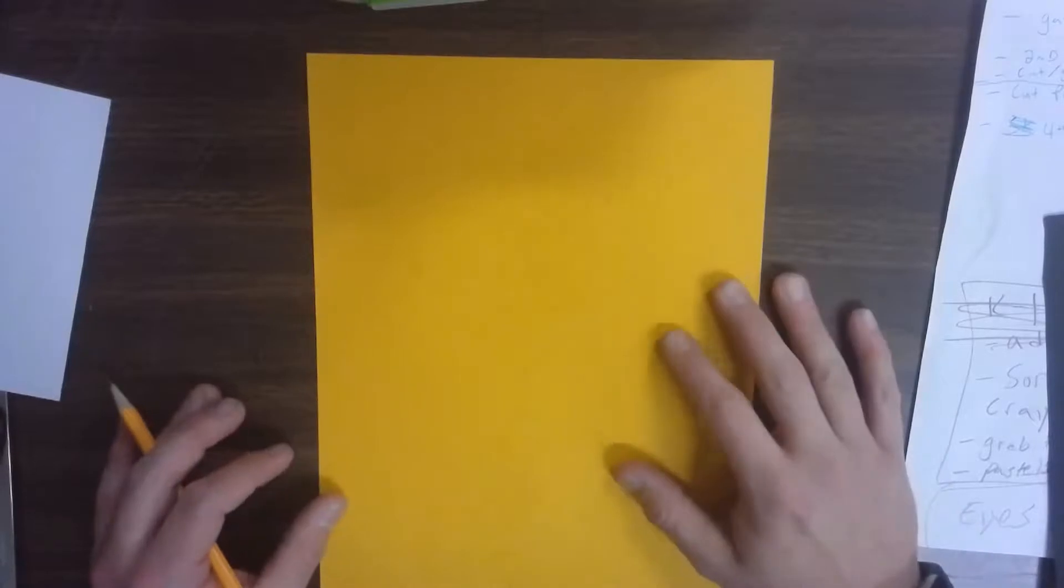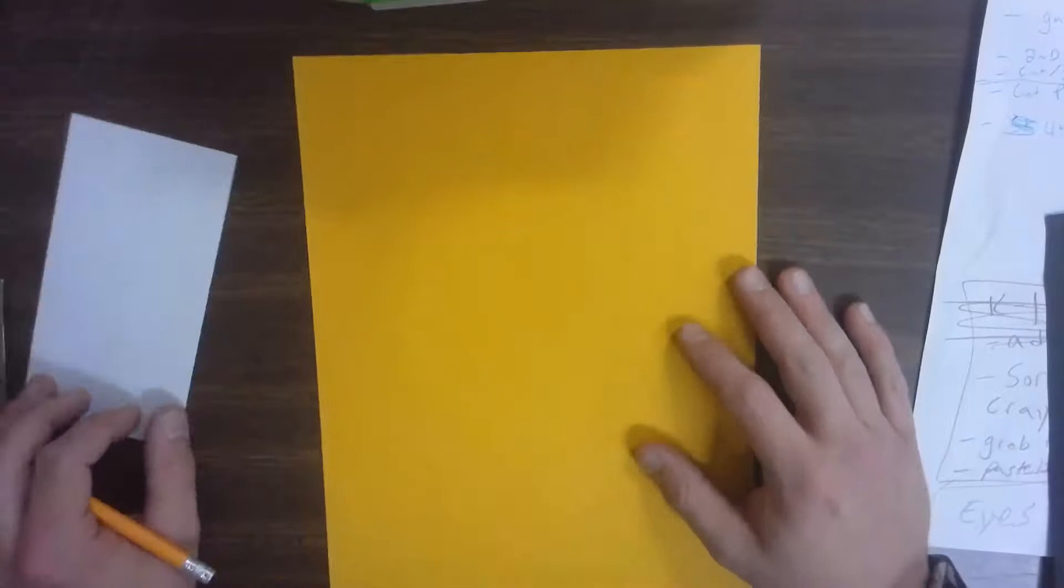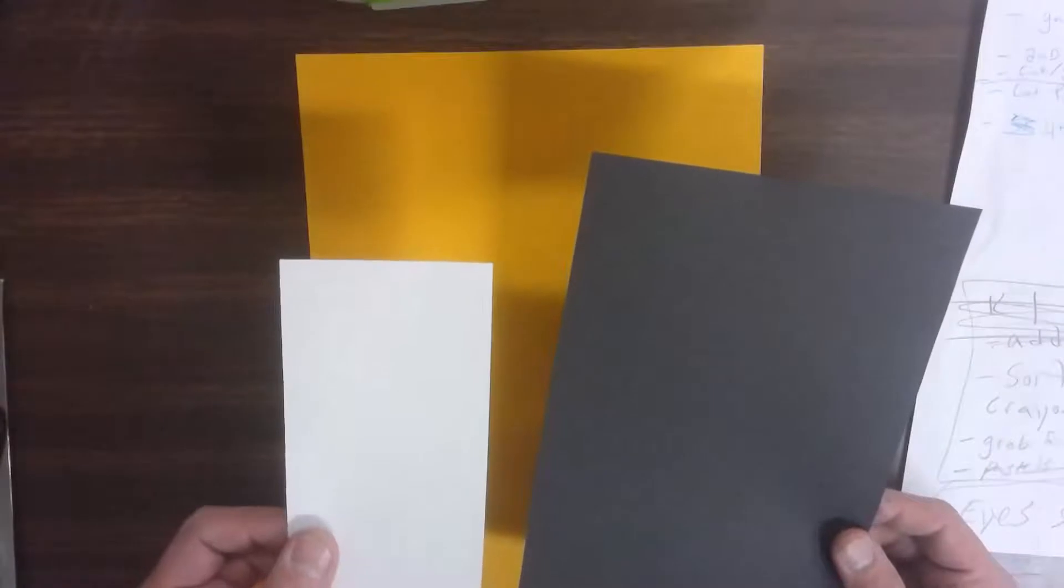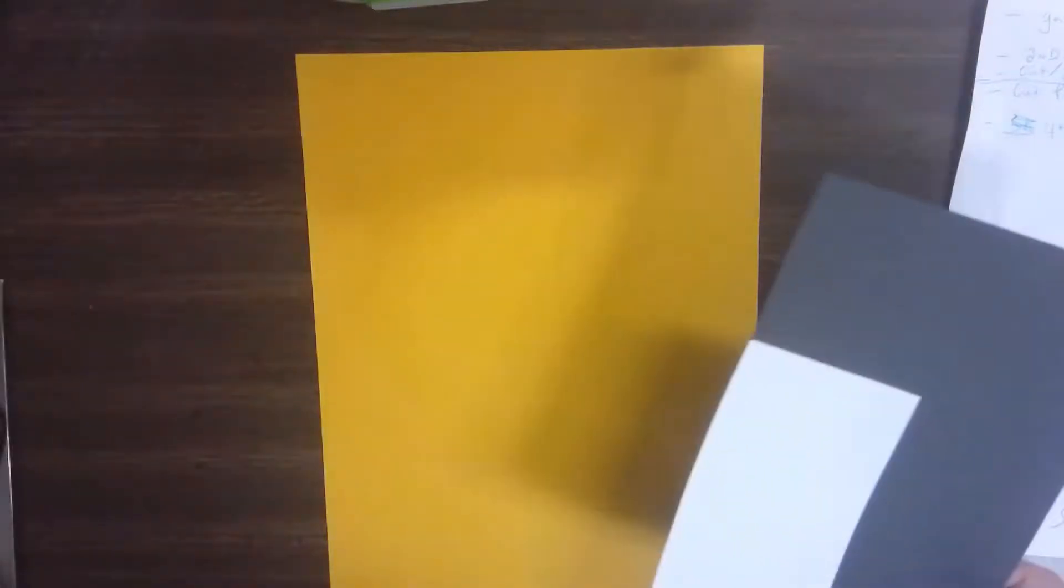Your first job is to pick the color you want your monster to be. I chose this yellowish orange sheet here. Along with that, I need to grab a black piece, at least one white piece for the teeth, and if you decide to do a tongue, you're going to want a red or pink piece as well.